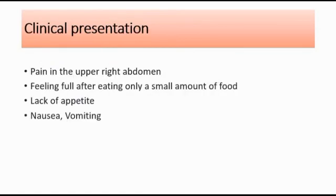For the clinical presentation, patients usually present with pain in the upper right abdomen, or the sense of feeling full after eating only a small amount of food. They might have lack of appetite and nausea or vomiting. Usually, liver hemangioma is small and asymptomatic, which means there are no symptoms and they are found incidentally.